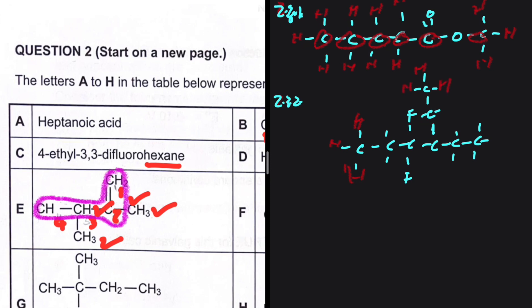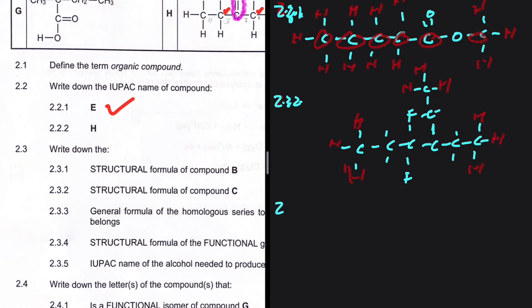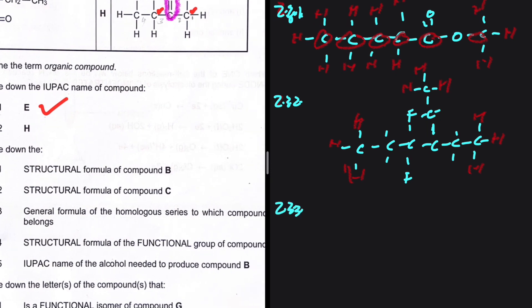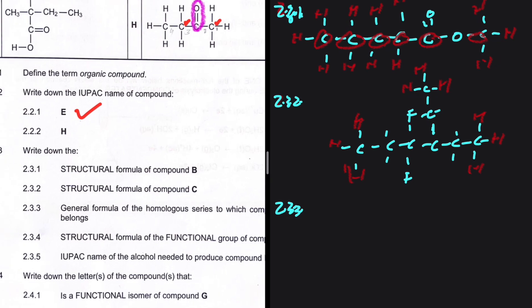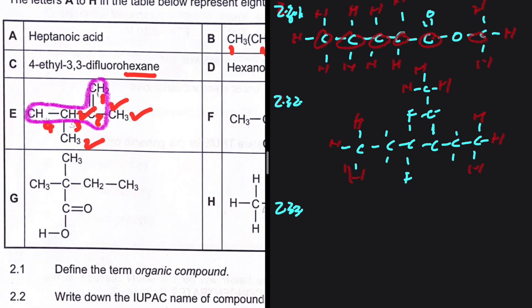For 2.3.3, the general formula of the homologous series to which compound E belongs — compound E is an alkene, so the general formula is CₙH₂ₙ. Not plus two, not minus two — just CₙH₂ₙ.